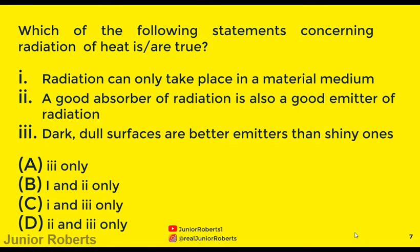This question asks which statements concerning radiation of heat are true. Option one — radiation can only take place in a material medium — is false. Option two — a good absorber of radiation is also a good emitter — is true. Option three — dark dull surfaces are better emitters than shiny ones — is also true. So the answer is D: two and three only.